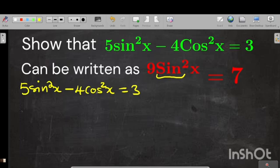So for that reason, it means that we need to do something to this cos squared here. We need to change this cos squared into sin. How are we going to do that?